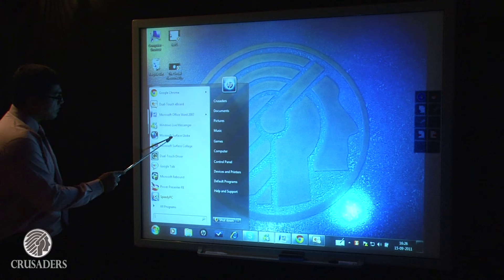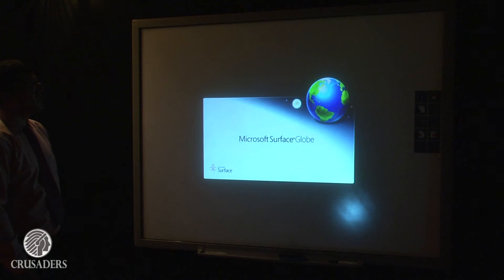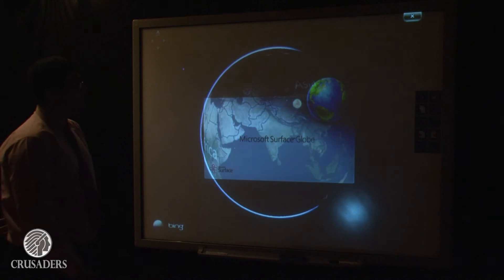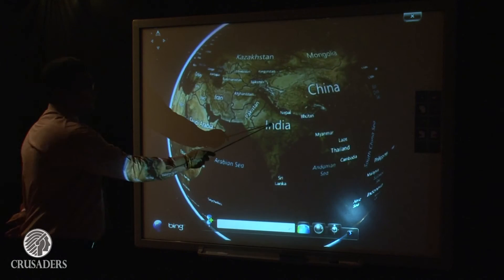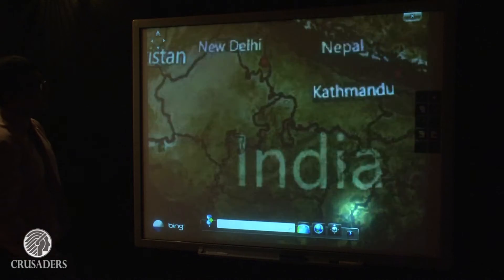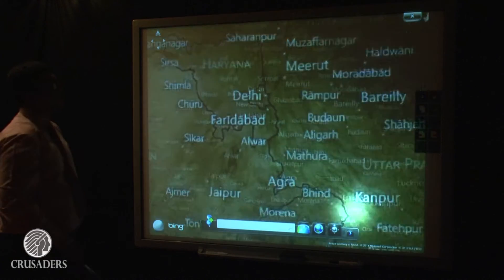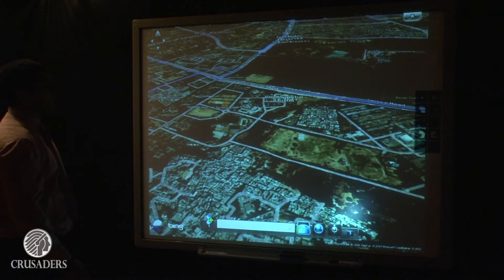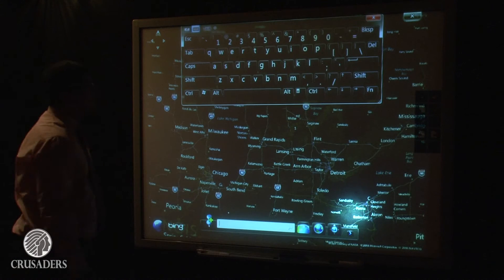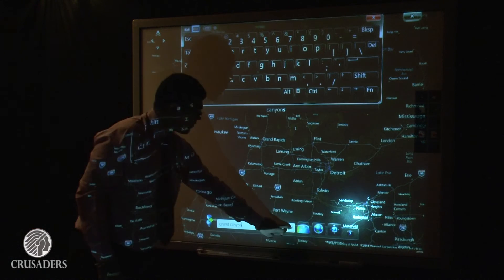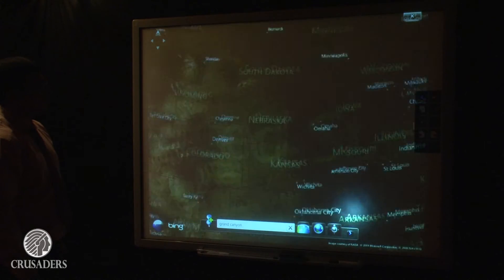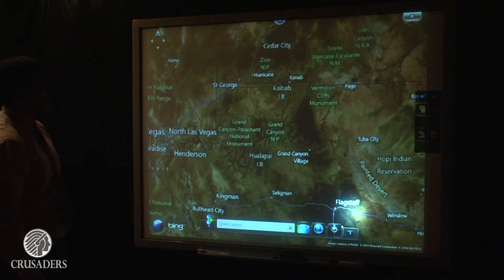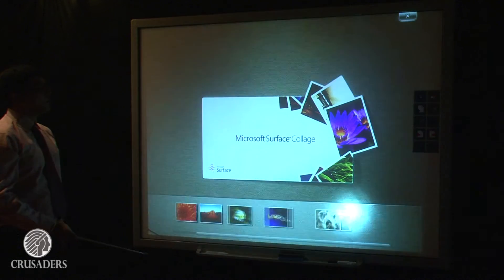With Windows 7 touchpack, you get a set of softwares such as the Microsoft surface globe wherein you can touch and zoom in any particular location, convert that into a 3D map, also you can search a particular location and the globe will point to it automatically.